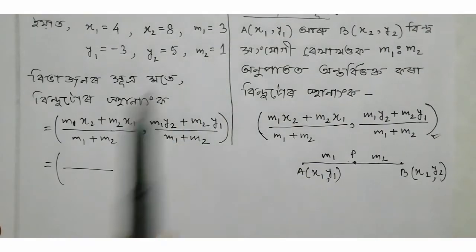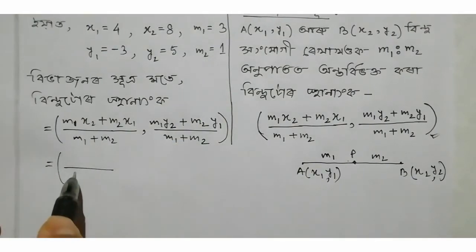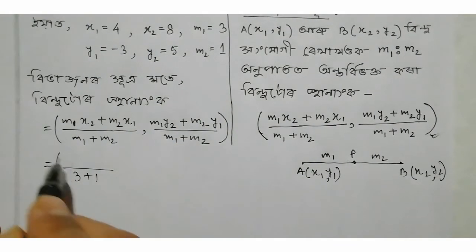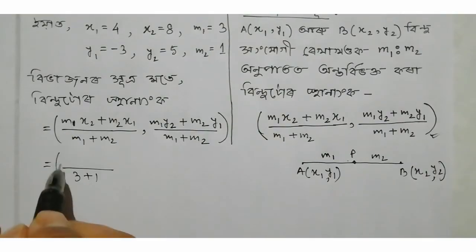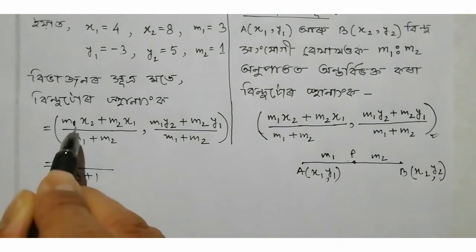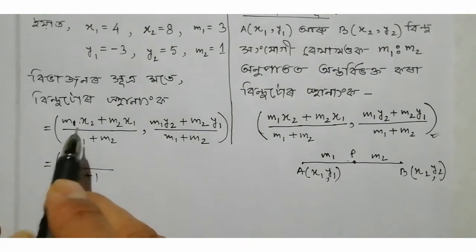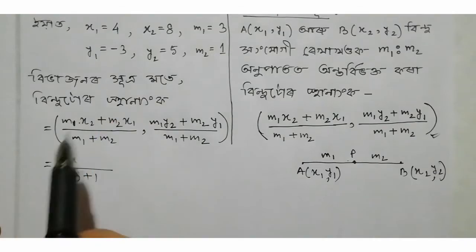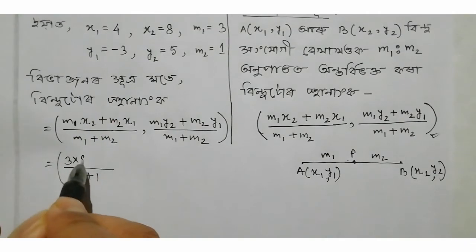M1 is 3, M2 is 1, and then 3 plus 1. If I write M1, then M1 is 3 into... x2 is 8, so 3 times 8.